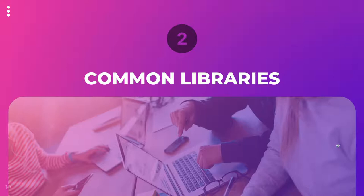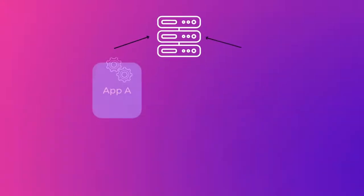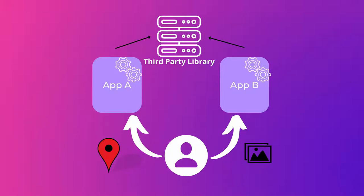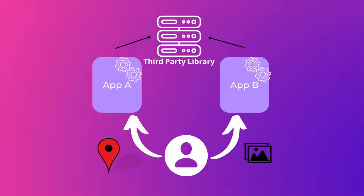What else is problematic? There's the issue of common libraries. You use libraries for crash dump collection, logging, and so on. When those libraries are integrated into an app, they have the same access that the app has — whatever permissions the app has, the library also has. And the library is a third-party thing altogether, so a library in one app can access location from that app, and the same library in another app can access images — basically collecting and profiling you across multiple apps.